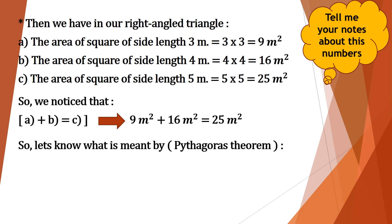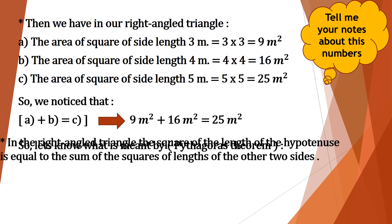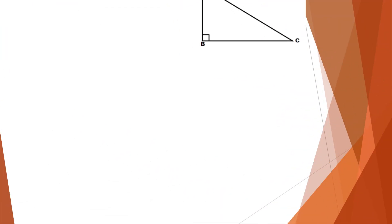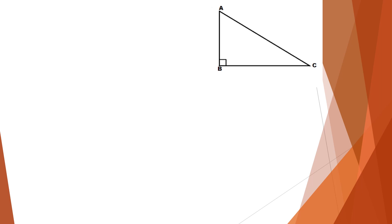So, let's understand what is meant by Pythagoras' theorem. In the right-angled triangle, the square of the length of the hypotenuse is equal to the sum of the squares of the lengths of the other two sides. We have triangle ABC with the right angle at B. The side opposite to the right angle is called the hypotenuse, which is AC.